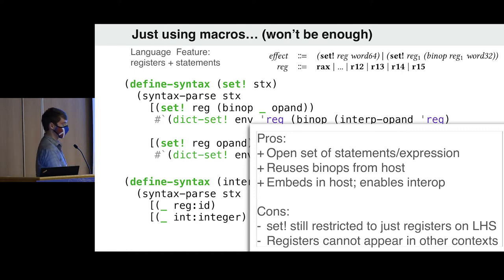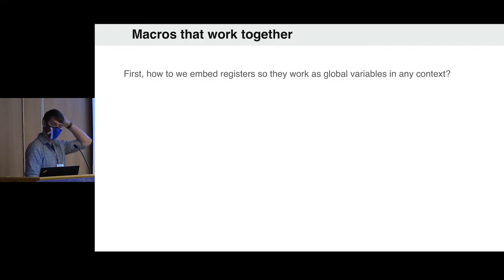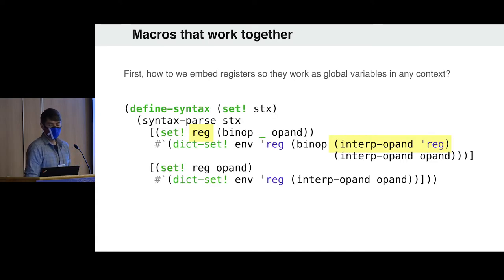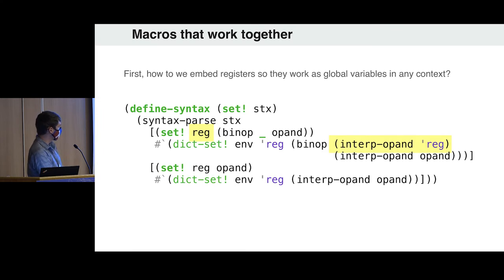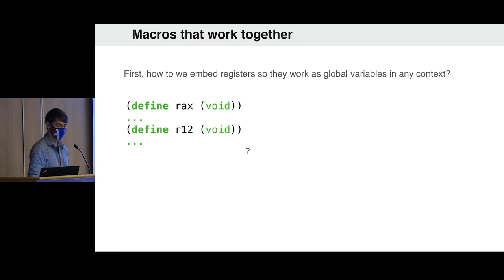So this is a macro-based approach. But I want to figure out how to embed registers properly into Racket, separate from all other features — that's the more language-oriented approach. The way we get that is we basically need macros that work together throughout the entire system. Racket has done a lot of work on making this happen. We expect registers to appear in two positions: here so we can set them, here so we can reference them. We need to figure out how to separate them from set-bang itself.